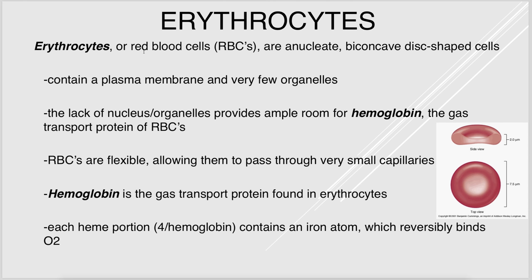Red blood cells are flexible — they need to be flexible so they can fit through very small capillaries. Hemoglobin has a globin portion and a heme portion, and there are four hemes per hemoglobin molecule. Each of those hemes contains iron, and iron can bind O2.